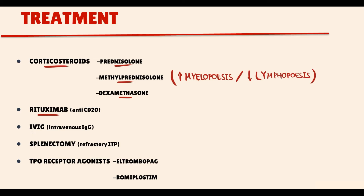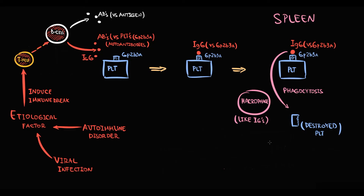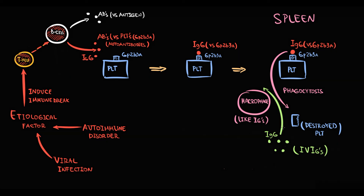The next option is intravenous immunoglobulins, which cause a short-lived increase in platelets. The concept is that infusing intravenous immunoglobulin G distracts macrophages from the immunoglobulins bound to platelets. Because macrophages are attracted to immunoglobulins rather than platelets themselves, they consume some of the injected immunoglobulins instead, sparing some platelets from destruction and thereby increasing the platelet count.